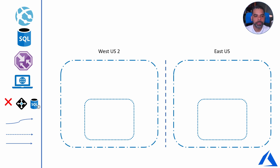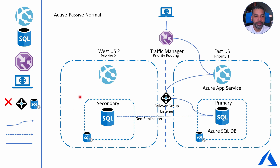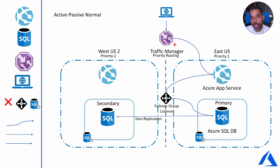We're deploying here an active-passive web application. What that means is that we're always going to route the traffic to the primary region — in this case, East US. This represents our web traffic users coming into our website. Traffic Manager acts as a router for that traffic. There are multiple routing options: you can route based on latency, so somebody coming from California might get routed to the West region. But in this case, we're going to use priority-based routing, which means it routes to the highest priority location, and if that has an issue, it routes to the next priority region.